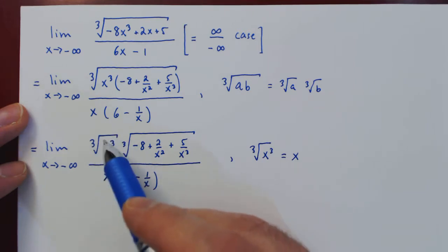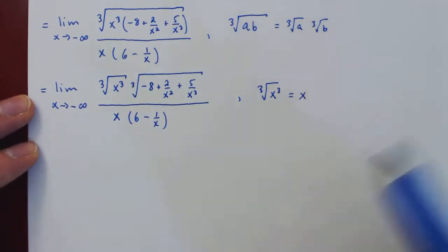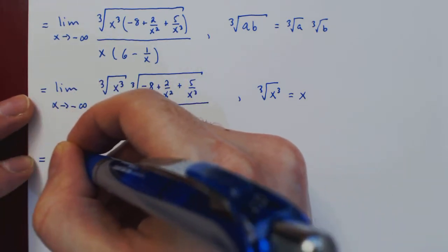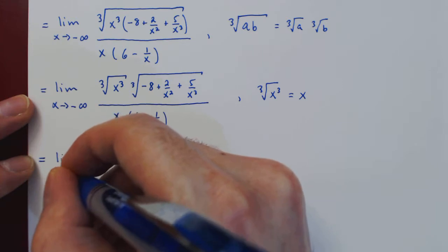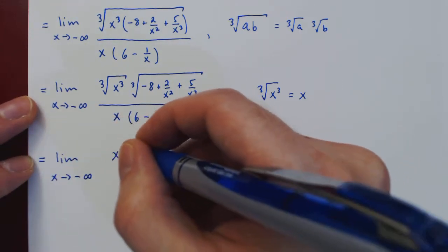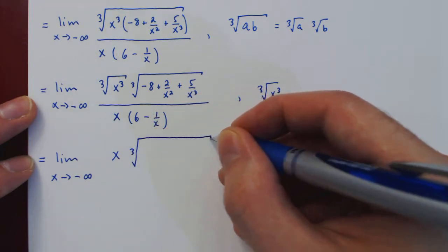And now this becomes x over x, so this will be good news as it will simplify and the case will be resolved. So the numerator we have x times the cube root of the second term.